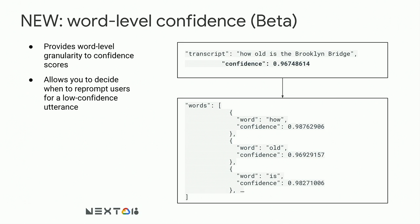Last but not least, another feature we're introducing is word-level confidence. It's been one of our top requested features from ISV and more sophisticated customers. It gives you a confidence score at the word level. Up until now, we had confidence scores based on segments. Now you actually get confidence scores based on each word, so you can take more targeted action — like re-prompting the user.